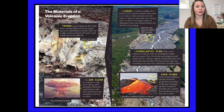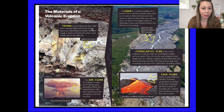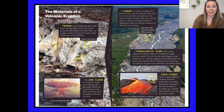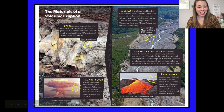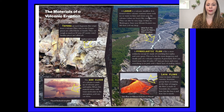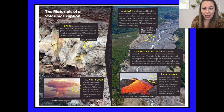Materials of a Volcanic Eruption — there's tephra. Tephra are rock fragments that erupt from a volcano; they vary in size. Larger pieces called blocks or bombs can weigh as much as 30 tons or 27 metric tons. Smaller pieces are called ash. The ash cloud of a volcano is made up of volcanic gases and tephra. When this material mixes with water molecules in the atmosphere, acid rain can form. A lahar is a volcanic mud flow formed when volcanic material mixes with ice or water in lakes and rivers near the volcano. Lahars are heavy — like wet concrete — and can be very large; a lahar in Washington State near Mount Rainier was 460 feet deep.